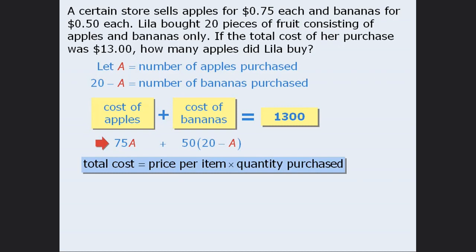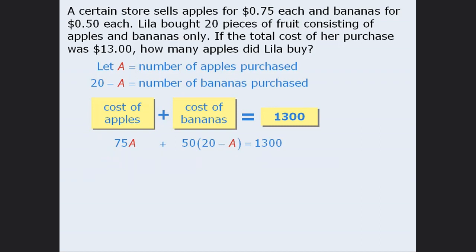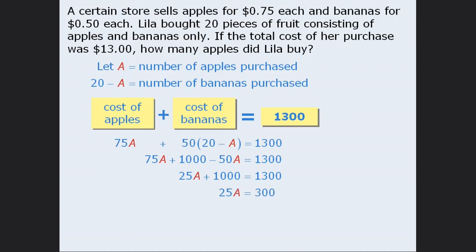This sum is equal to 1300 cents. Now that we have an equation, we can solve it for A. First, we'll expand the left-hand side, and then simplify. When we subtract 1,000 from both sides and divide both sides by 25, we get A equals 12. This means that Leela bought a total of 12 apples.